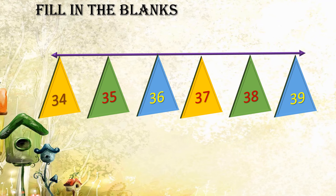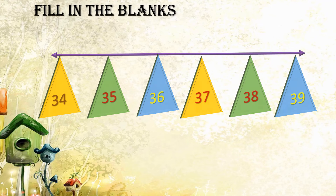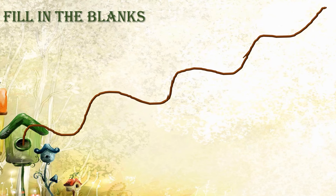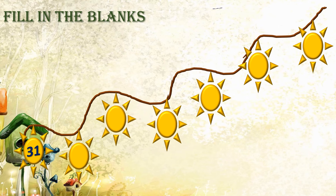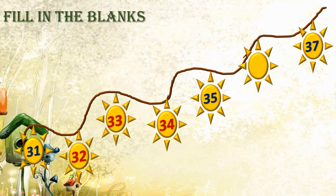One more fill in the blanks: see the design. Three numbers are given — 31, 35, and 37. Let us begin: after 31 comes 32, then 33, then 34; 35 is already there; then comes 36; and 37 is there. We have filled all the blanks.